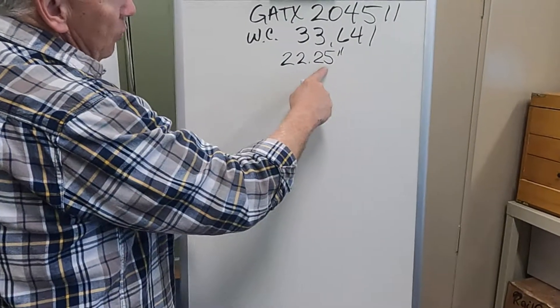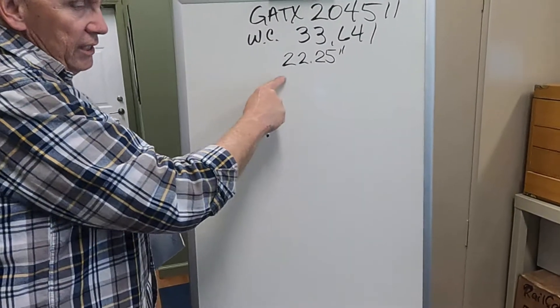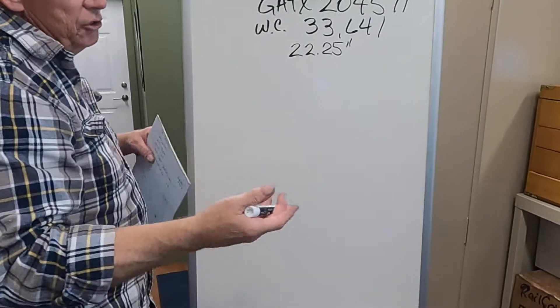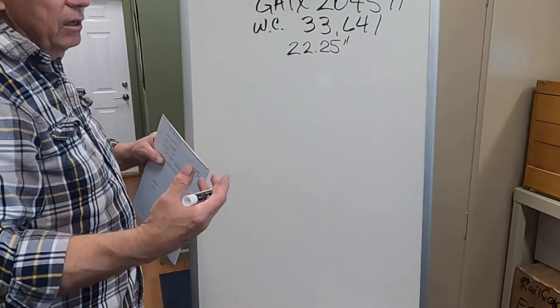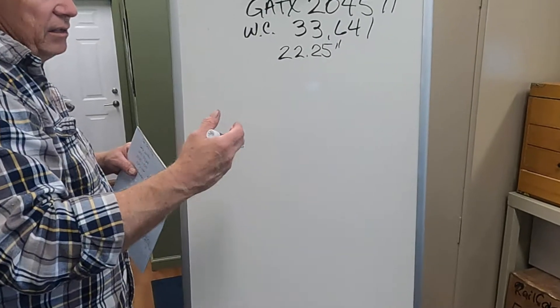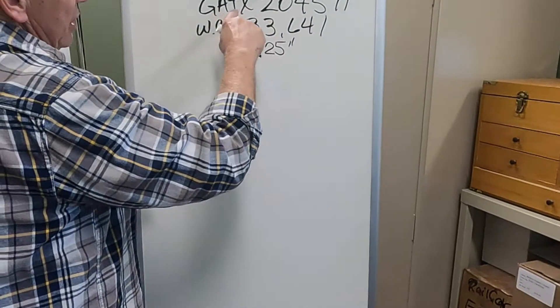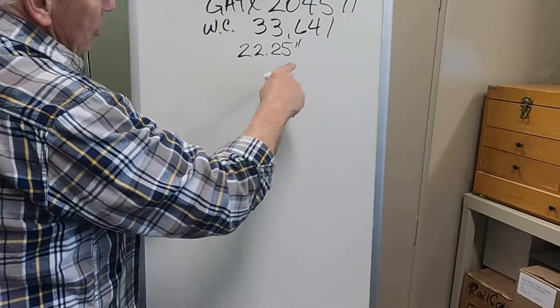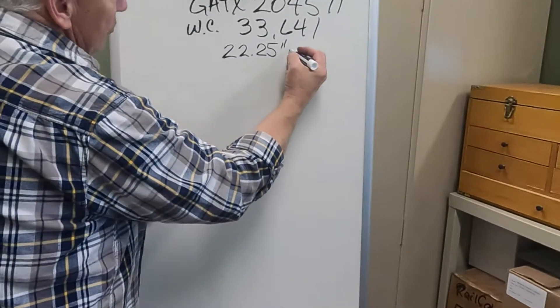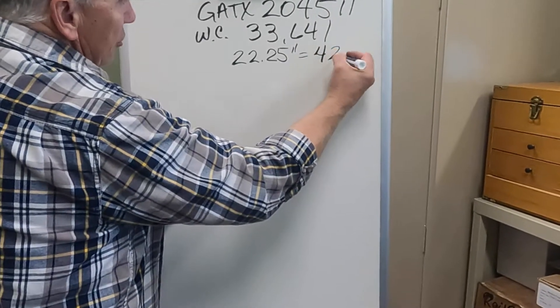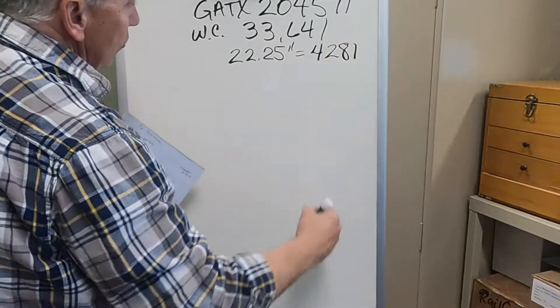In order to find what this translates to into gallons, for a GATX car, you go to a GATX rail, and then you find the gauge tables. Go to the gauge table, and you put in GATX, you put in that. And when you do, you come up, and it says that equals out to 4,281 gallons.